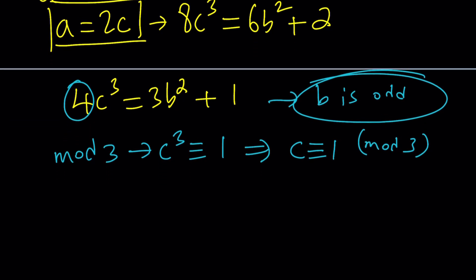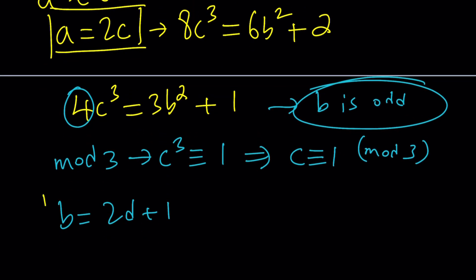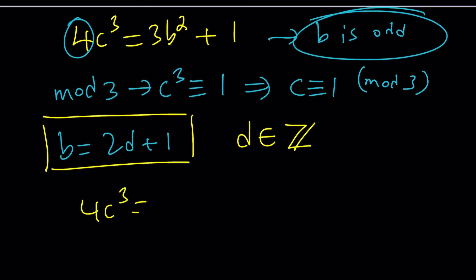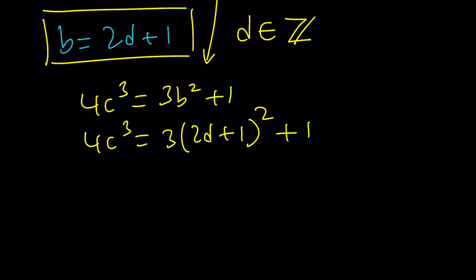Let's go ahead and write b as 2d + 1. Remember, a was even and we wrote it as 2c. Now we're doing the same thing for b, but b is odd, so we can write it as 2d + 1, where d is just another integer. Now, if b is given as follows, we do know that 4c³ is equal to 3b² + 1. We're going to replace b with 2d + 1. We're going to square it, multiply by 3, and add 1, and let's see what we get from there.